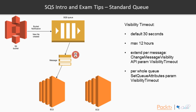The default visibility timeout is 30 seconds, with a maximum of 12 hours. You can extend the visibility per message using the ChangeMessageVisibility API and changing the visibility timeout parameter — this restarts the timeout with the new value. Alternatively, you can set it per queue using the SetQueueAttributes API with the visibility timeout parameter. The maximum visibility timeout for any message is 12 hours.